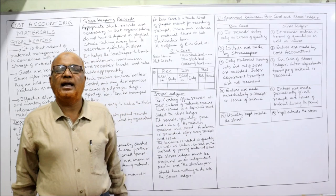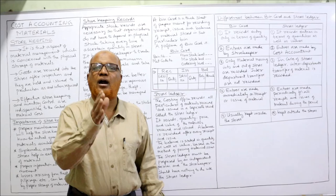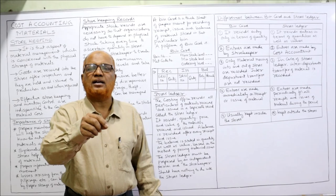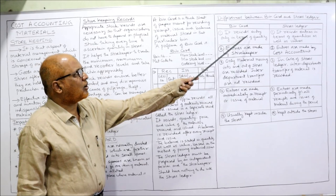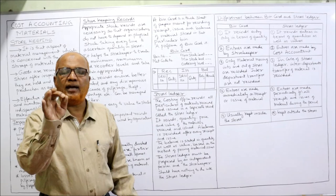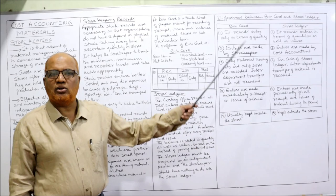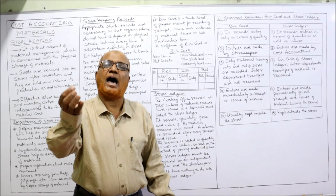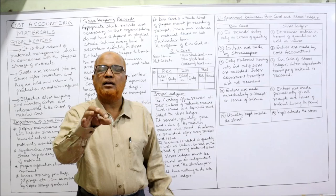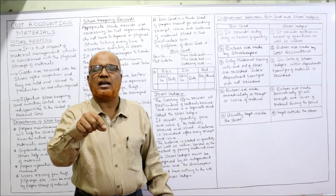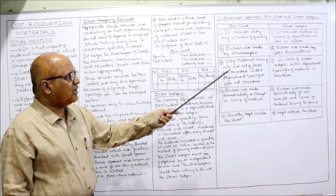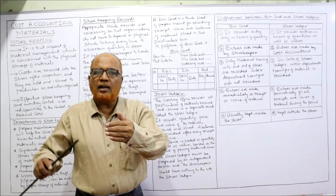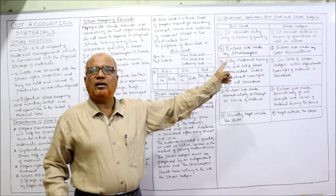The differences between bin card and stores ledger: both are records used to enter transactions of material received and issued, but they differ in the following ways. First, the bin card records entries only in terms of quantity — there is no price or value column — whereas the stores ledger records entries both in quantity as well as value. Second, entries are made by the storekeeper in the bin card, whereas entries in the stores ledger are made by the cost accountant.